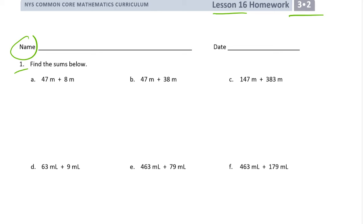47 plus 8. It's easy to think of this 8 as a 3 and a 5 because we can see that 7 and 3 make 10. So it's really 50 plus 5.